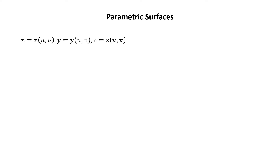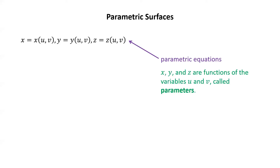So let's look at three equations of the form x equals x of uv, y equals y of uv, z equals z of uv. These are known as parametric equations. x, y, and z in this case are functions of the variables u and v, which are called parameters.